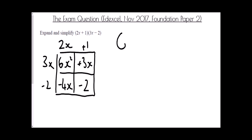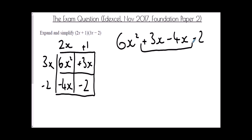So we have six x squared plus three x minus four x minus two. Simplifying: six x squared remains. Positive three x minus four x — if I've got positive three and take away four I'm at negative one, so I just write negative x without the number one. And finally minus two. Our answer is six x squared minus x minus two.